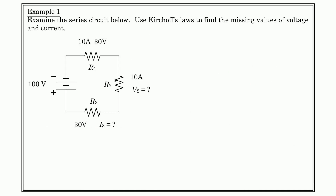Let's examine a circuit. We're going to use Kirchhoff's Laws to solve for our missing variables. I need to find I3 and I need to find V2. I've got 100 volts available. If I've got 10 amps flowing through each section of this series circuit, then at every single point in this circuit 10 amps are flowing. So by inspection, I3 is equal to 10 amps.